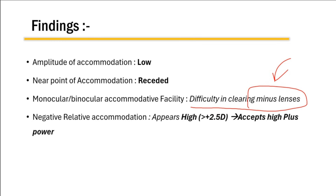The negative relative amplitude of accommodation (NRA) appears high and the patient accepts high plus lenses. The NRA represents the limit of relaxing accommodation before the patient experiences blur. In accommodation insufficiency, since the patient is already under-accommodating, they can accept more plus power before noticing blur, making it seem like they have an excessively high NRA — it's more of a relative excess rather than a true overactive response.